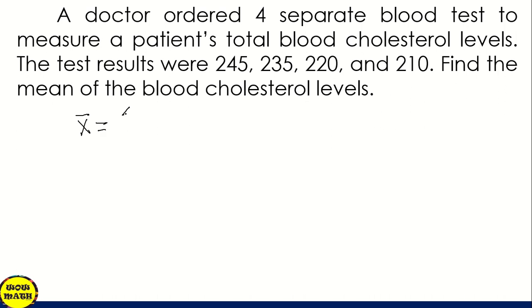The formula is the summation of x over n. So we're going to add 245 plus 235 plus 220 plus 210 all over. So count them: 1, 2, 3, 4. So all over 4.